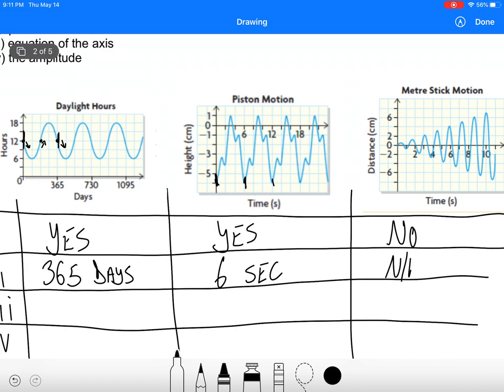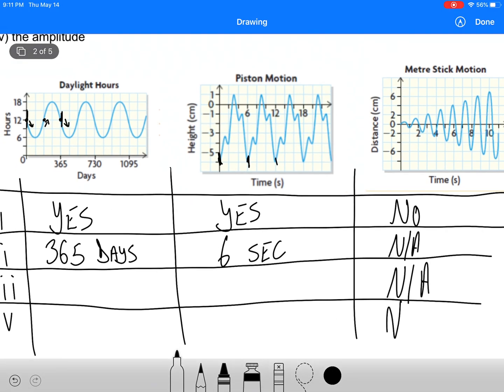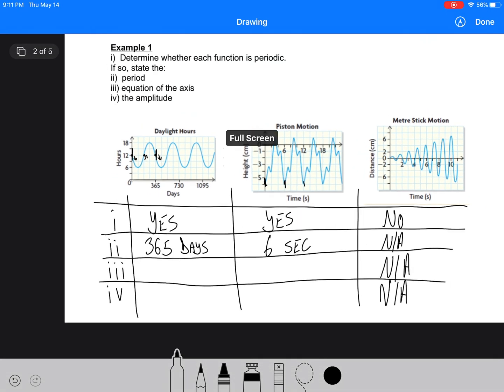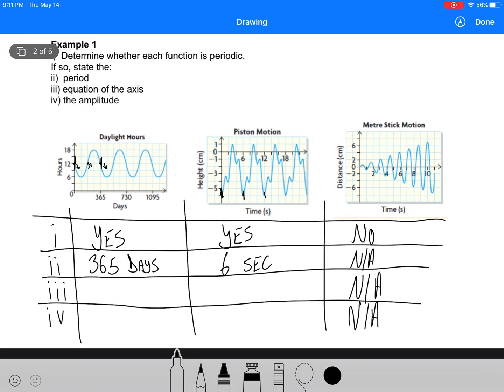Now the same thing is happening here. I've already marked them out, so we can see from here to here is six seconds. Now we can't do this one because we don't actually know. You could look and argue that it's getting about one and a half seconds, I guess, but it's changing. So we're not going to worry about that. N/A for the whole thing because it's not a periodic function.